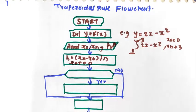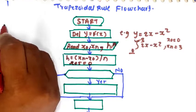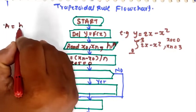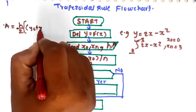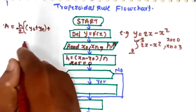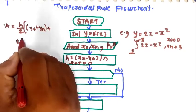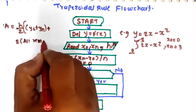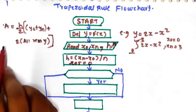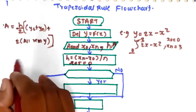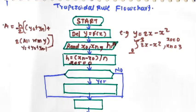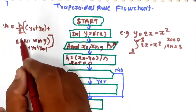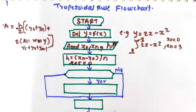We know that the formula for the trapezoidal rule is: A equals h by 2, into y0 plus yn, plus twice all remaining terms of y. So the formula is h upon 2 times (y0 plus yn plus twice the remaining terms of y), meaning y1, y2, y3, up to yn minus 1. This is the trapezoidal formula. We have to calculate it term by term — first the intermediate terms, then the boundary terms, and finally the overall area, step by step.